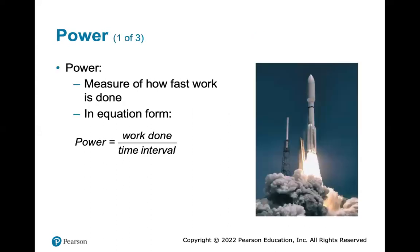Power is a measure of how fast work is done. In equation form, power equals the work done — force times distance — divided by the time interval. If you do something slowly, your power is much less: the force times distance is the same, but if the time interval increases, power decreases. Conversely, if the time interval decreases, power increases. So the faster you do something, the more power it takes. Power is directly proportional to the work done and inversely proportional to the time interval.